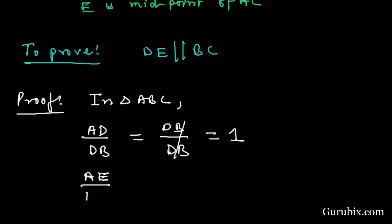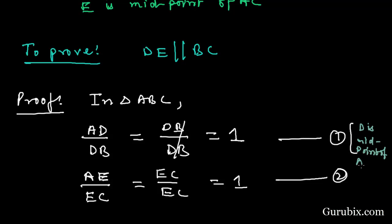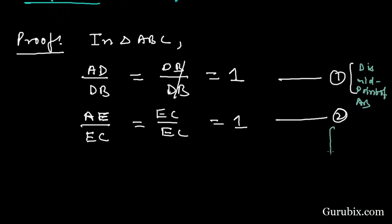And now we shall find the ratio of AE over EC. But AE and EC are equal, so we can write EC here. This is equal to 1. This is equation number 1, this is equation number 2. This is because D is midpoint of AB and same as E is midpoint of AC. So from equation number 1 and equation number 2...